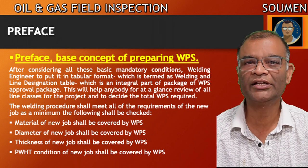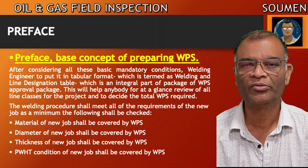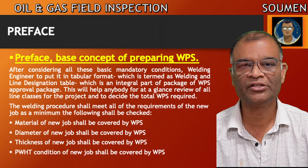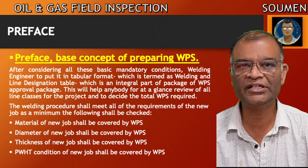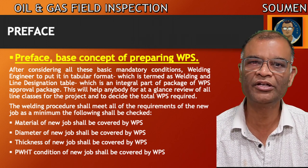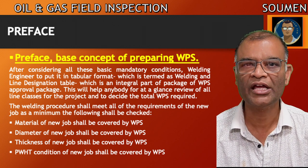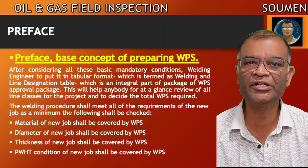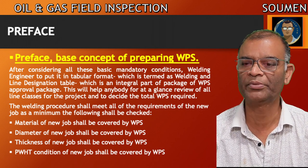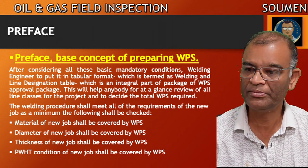In company standards there are different line classes. From the project scope, the welding engineer and the quality lead will sit together and see how many line classes there are. This tabular format — the weld and line designation table — will also serve as a welding procedure log for the project. This weld and line designation table is a mandatory attachment for the welding procedure approval submission to the company. The welding procedure shall meet all the requirements of the new job as a minimum.